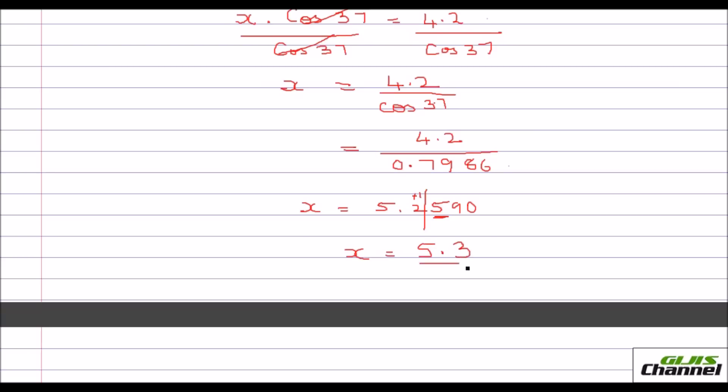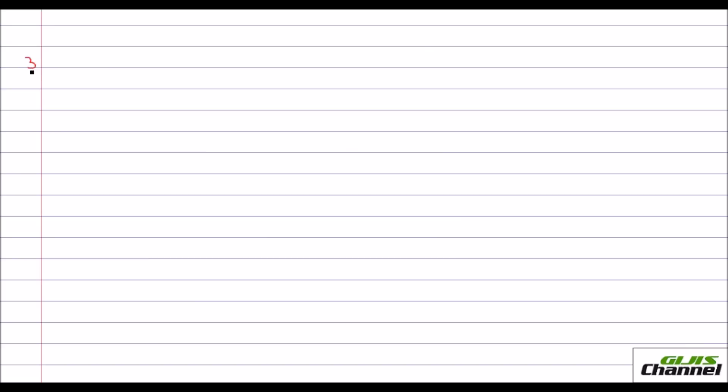Isn't that easy? The third one, they have given you the adjacent side and the hypotenuse. So this is given as 63 and this one is given as 80.